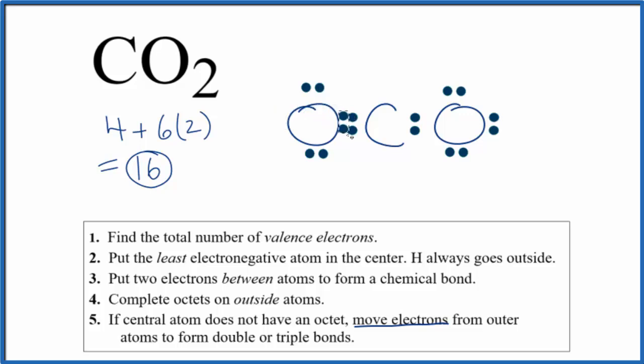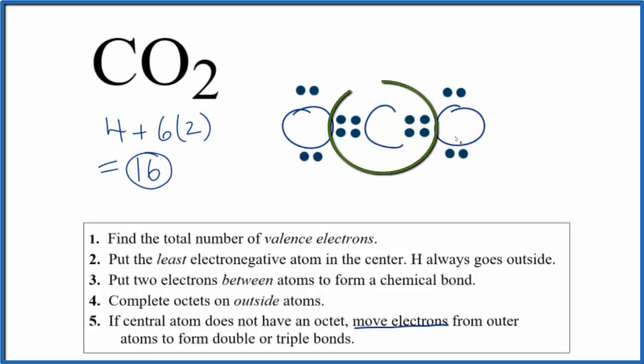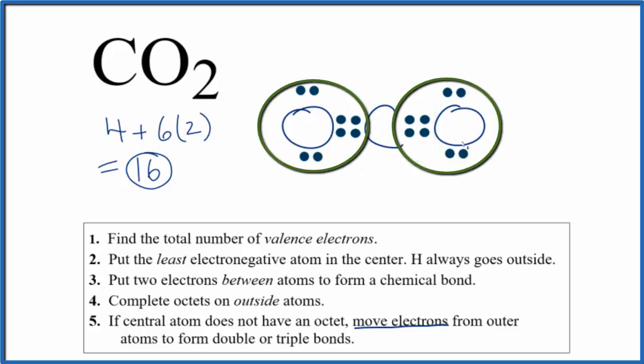So let's move these two right here. We're only using 16 valence electrons. We still have our octet on the oxygen, but the carbon now has six. If we move these two here, now the carbon has eight valence electrons. It has an octet, and the oxygen still has an octet. This is the Lewis structure for CO2.